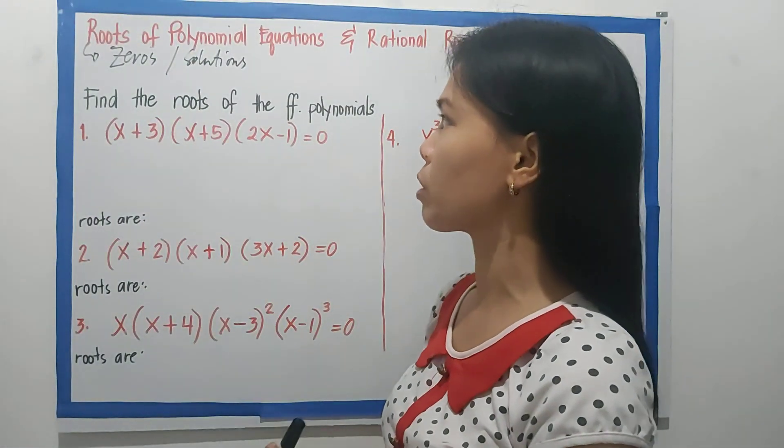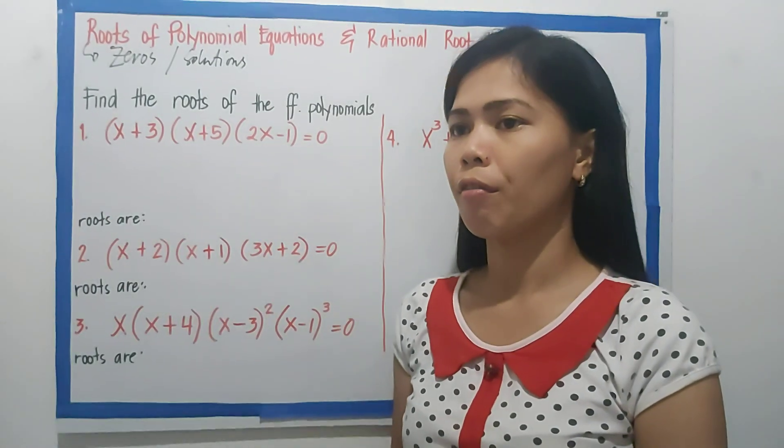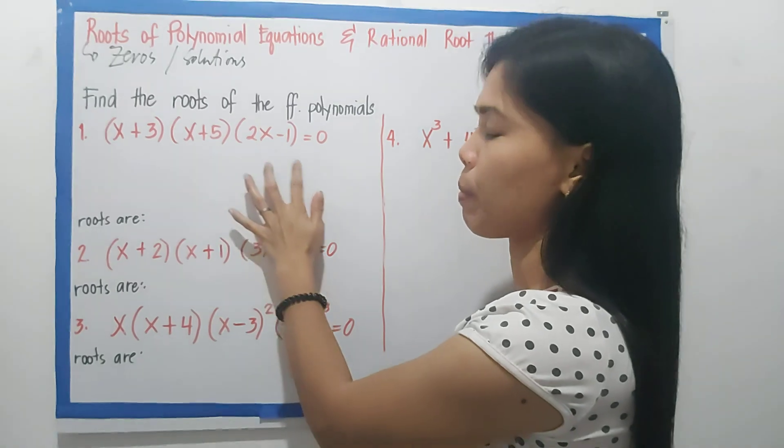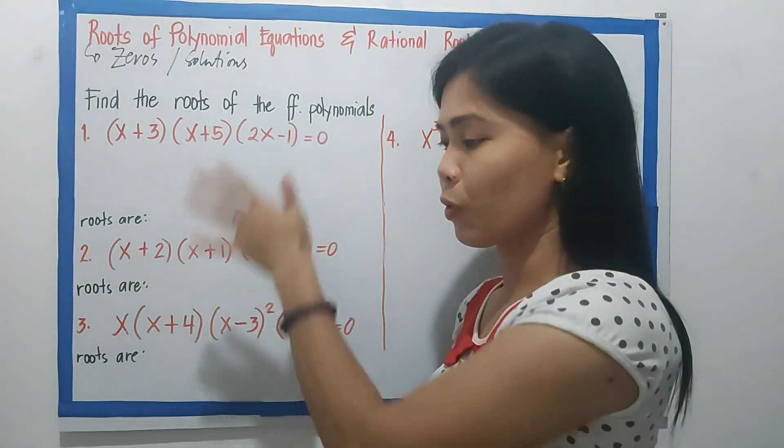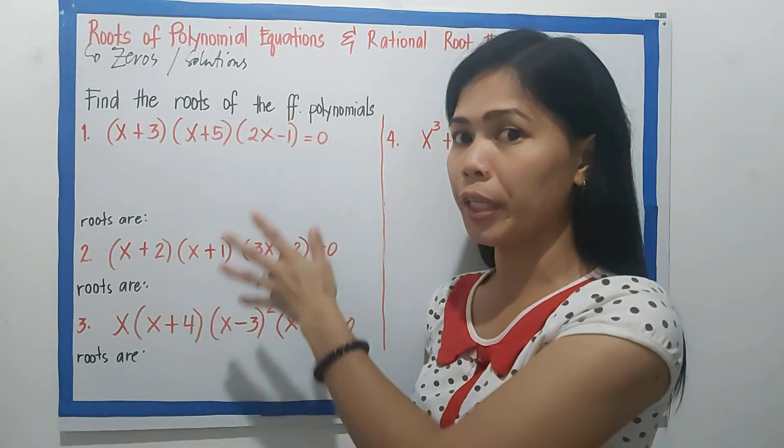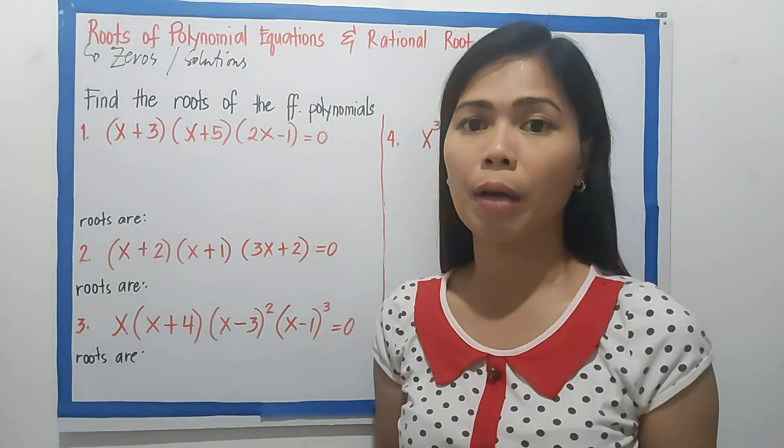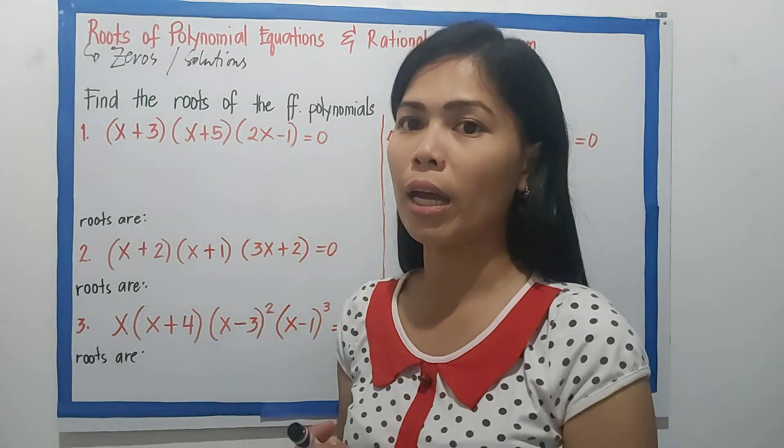So for now, let's find the roots of the following polynomial equations. First up, (x+3)(x+5)(2x-1)=0. As you can see, all of these are written in factored form. It's easier to get the roots when in factored form. Let's see why.